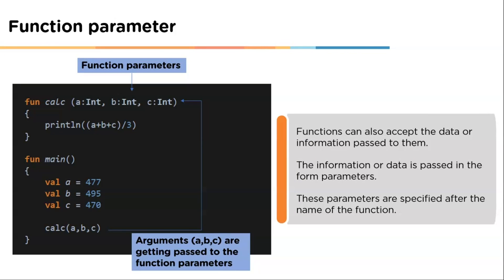Function parameters can be defined as the information that is passed to the function. Basically, functions can accept data or information passed to them in the form of parameters. After receiving the data, the function can use it to calculate or display as per the function definition. Parameters are specified after the name of the function, inside parentheses separated by commas, and we can pass as many parameters as we want.